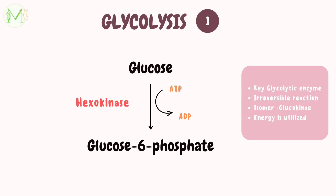Now let's decode the glycolytic pathway stepwise. In step 1, glucose is phosphorylated to glucose-6-phosphate by an enzyme called hexokinase. This enzyme also splits ATP to ADP, and the phosphate group is added to the glucose. The energy released by the hydrolysis of ATP is utilized for the forward reaction. Hexokinase is a key glycolytic enzyme, and the kinase reaction is irreversible.